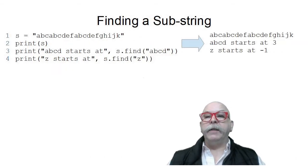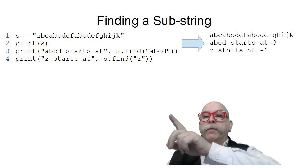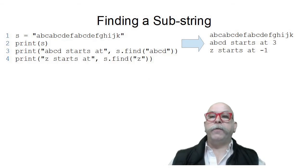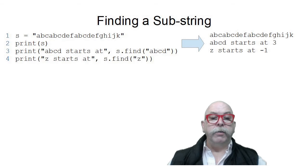Using the same string as in the previous slide, you can see that the letters ABCD start at character three. And if you count over, you can see that zero, one, two, three is where the first ABCD occurs. And the letter Z starts where? Well, it starts at negative one because there isn't one to find, and negative one represents we couldn't find it.